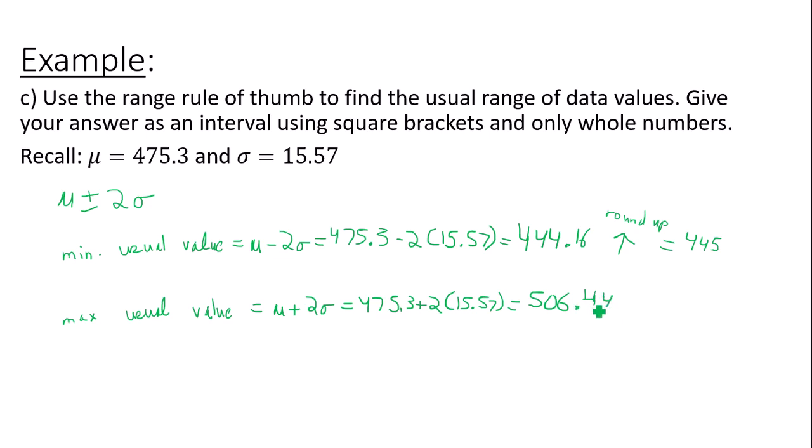Now, to win more than 506.44 games would be considered unusual. So the cutoff for whole number of games, because you can't win part of a game, is 506. And this one would do it anyway, but in general for a maximum usual value you should always round down. Regardless if this was 506.74, you would still round down to 506. So the interval for the usual number of games that you could win, the usual values, would be 445 comma 506. That is the interval for the usual number of games that you would win.